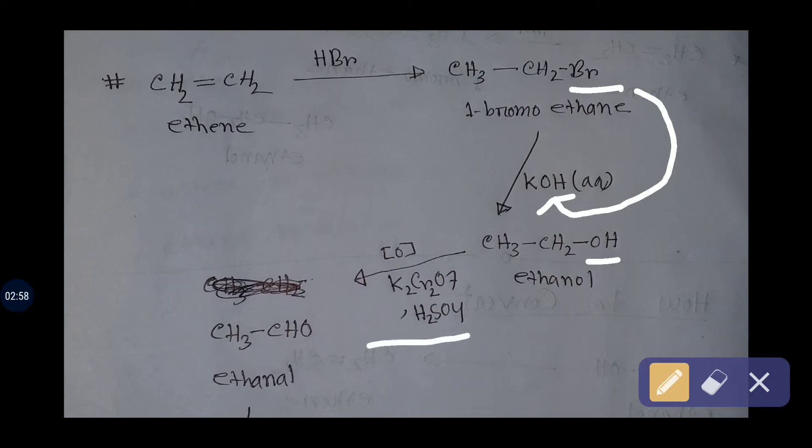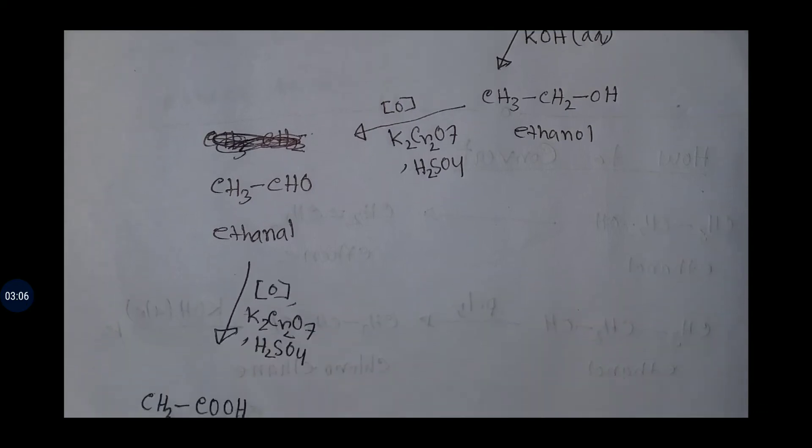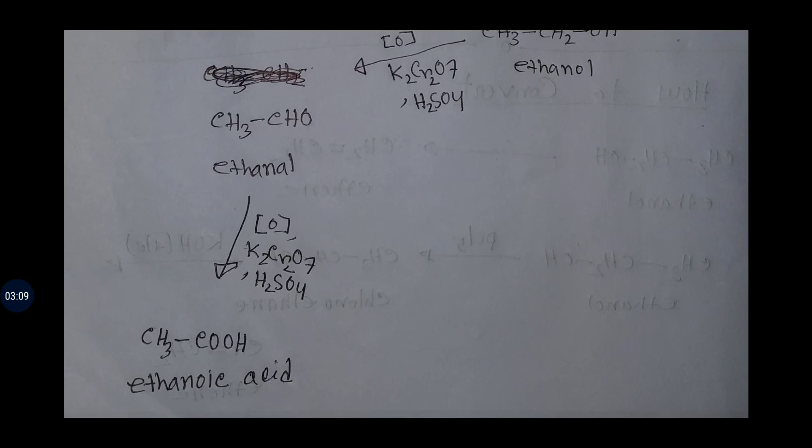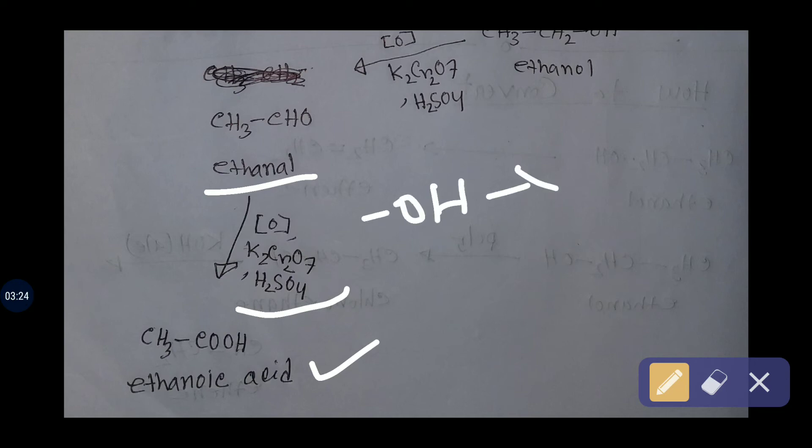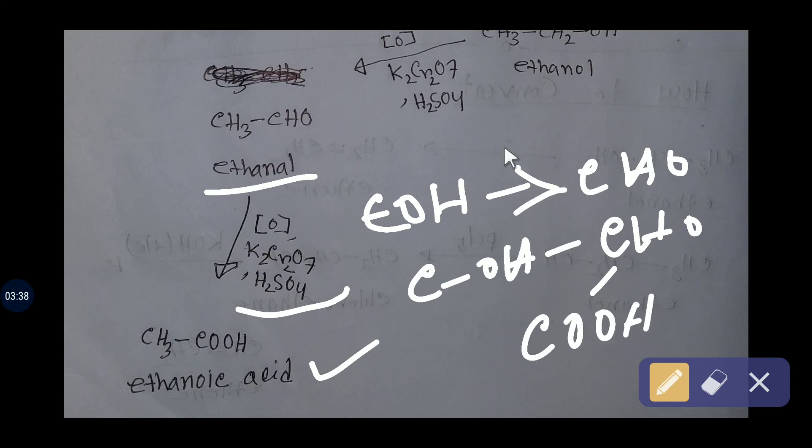potassium dichromate and sulfuric acid, at first you will get aldehyde which is ethanal. If you again oxidize the ethanal by the same reagent, you will get ethanoic acid. That is, from CH2OH you will get CHO, then you will get COOH—oxidizing from alcohol group to aldehyde group, aldehyde group to carboxylic acid group.